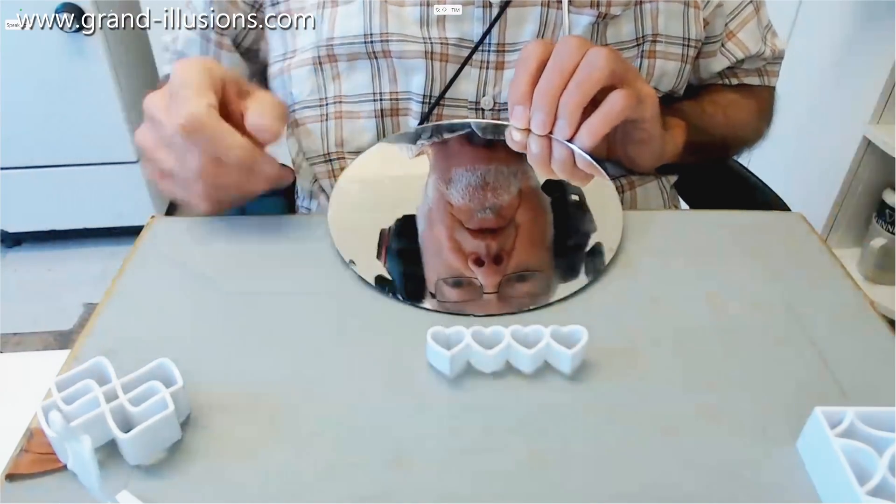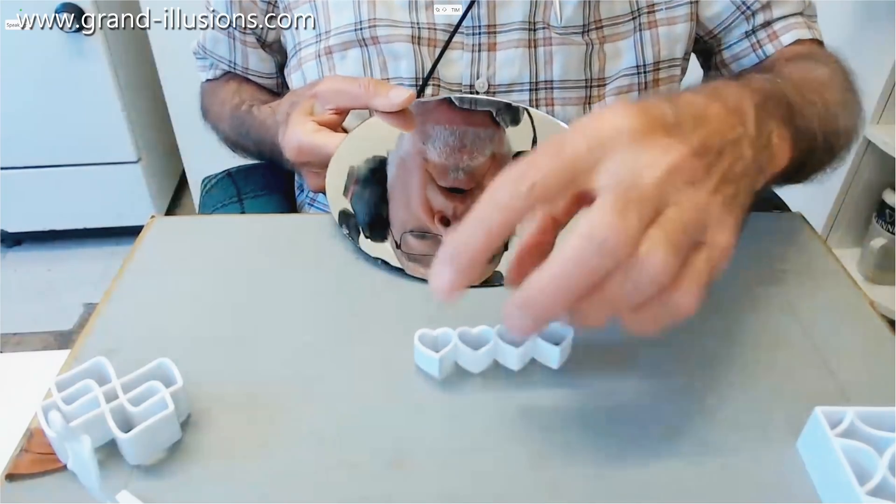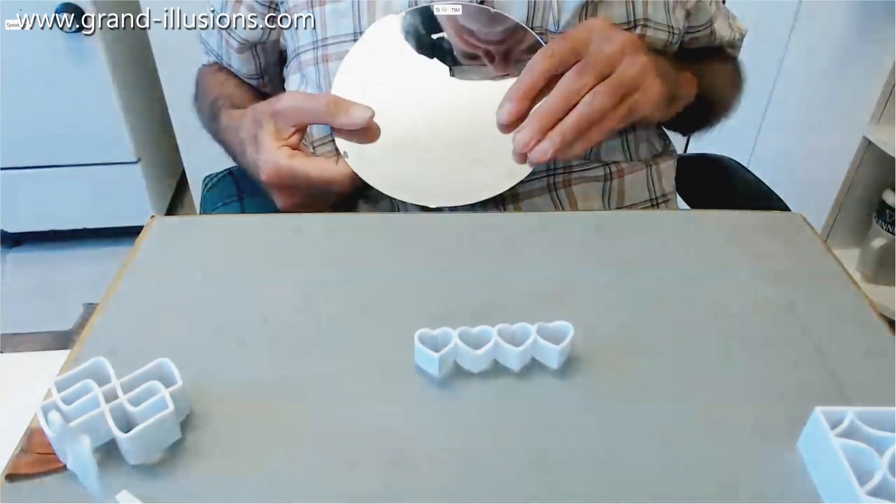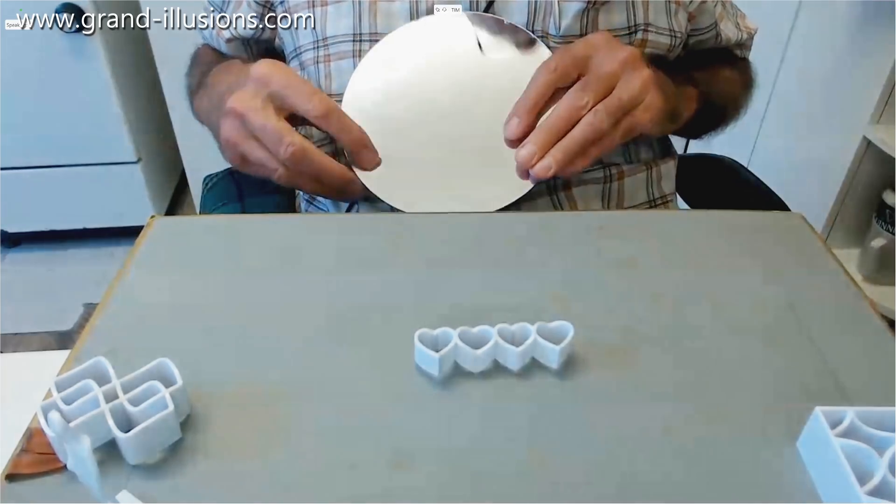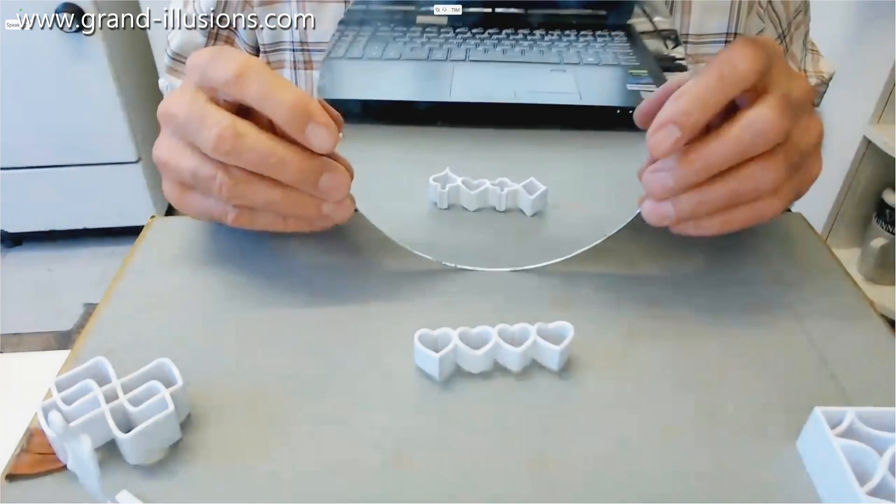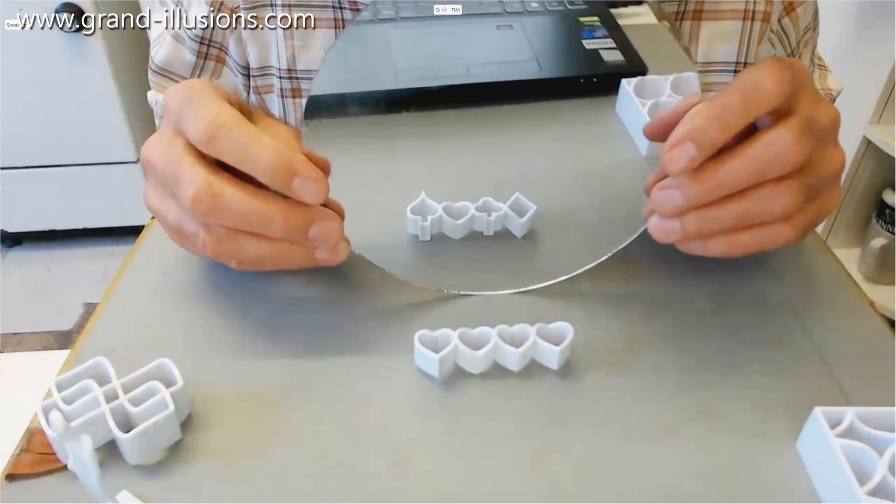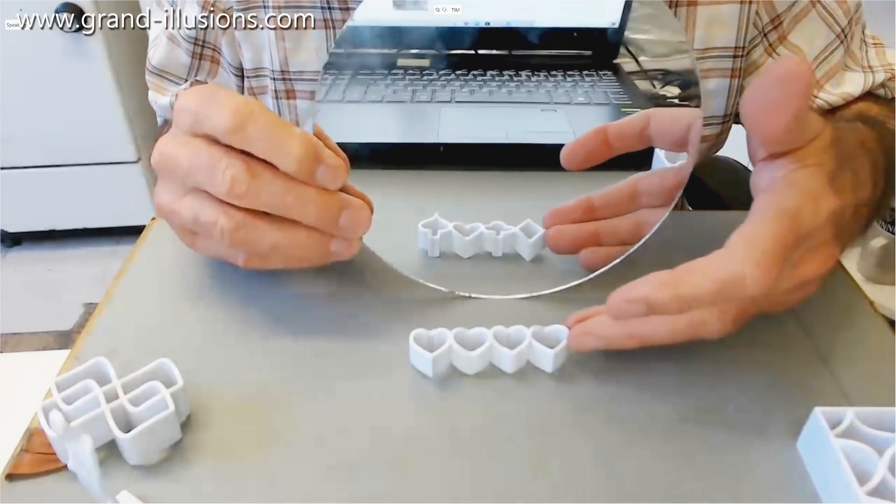So here's the first one, four hearts, and it's fairly clearly one, two, three, four hearts. However, when I put a mirror behind it and reflect, oh my goodness me, in the reflection it changes to the four suits.